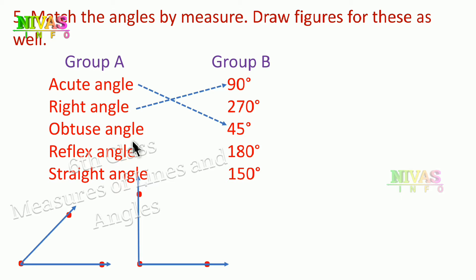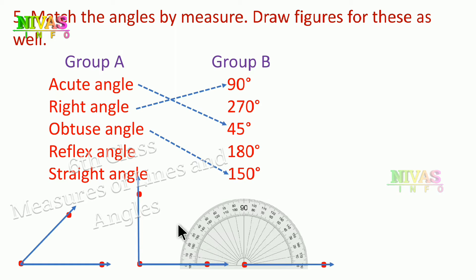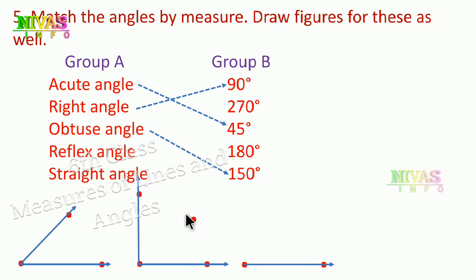Next, the obtuse angle. An obtuse angle is greater than 90 degrees. We are drawing 150 degrees. Take two points, place the protractor, and count: 90, 100, 110, 120, 130, 140, 150. Mark the dot and draw the line. This is the obtuse angle.